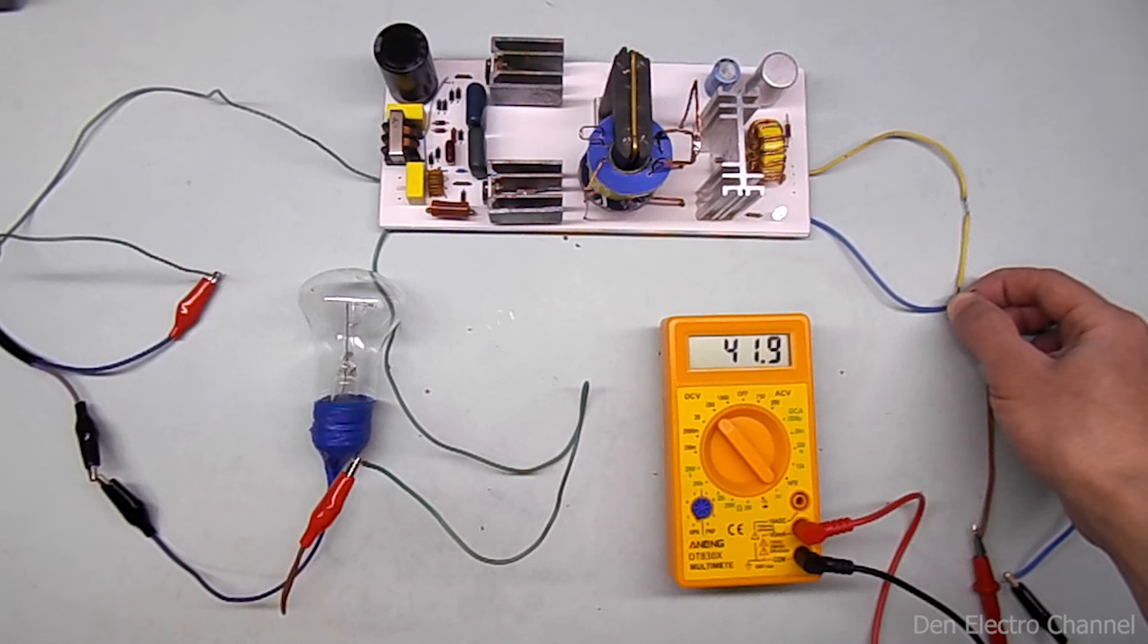This is due to the fact that the ripples coming from the secondary winding of the transformer are not completely smoothed out by the filter. Therefore, the multimeter begins to fail.